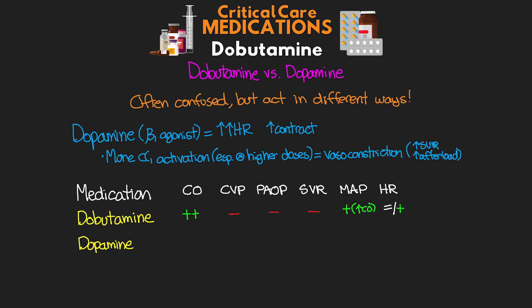When we talk about dopamine, we consider two different doses: less than 10 micrograms per kilogram per minute and greater than 10. For the lower dose, we see an increase in cardiac output, and we definitely see increases in CVP and PAOP. Afterload is either about the same or may see an initial increase, and the same goes for MAP. Because of the chronotropic effect, we definitely see an increase in heart rate. For higher-dose dopamine, we again see the increase in cardiac output and increases in CVP and PAOP, but now because we're hitting those alpha-1 effects, we see a marked increase in SVR and MAP, along with the increased heart rate.